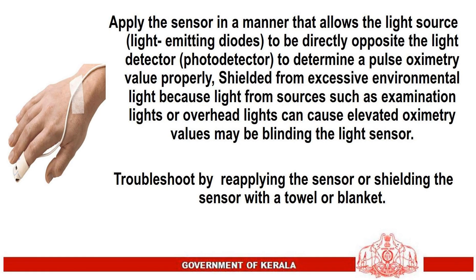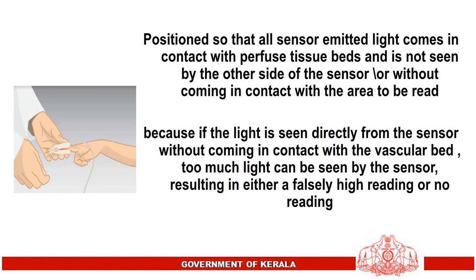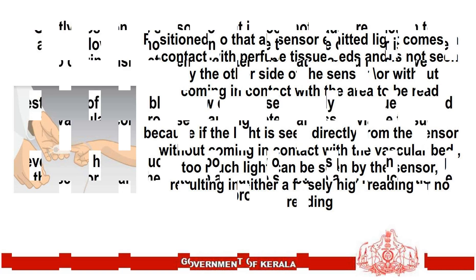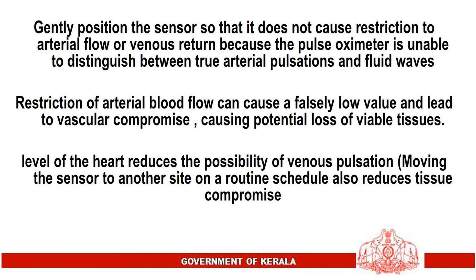Apply the sensor so that the light emitting diodes are directly opposite the photo detector, and properly shielded from excessive environmental light. Light from examination lights or overhead lights can cause elevated oximetry values by blinding the light sensor — troubleshoot by reapplying the sensor or shielding it with a towel or blanket. Position so that all sensor-emitted light comes in contact with perfused tissue beds. If light is seen directly from the sensor without contact with the vascular bed, too much light can reach the sensor, resulting in a falsely high reading or no reading.